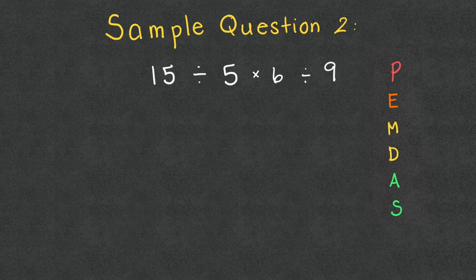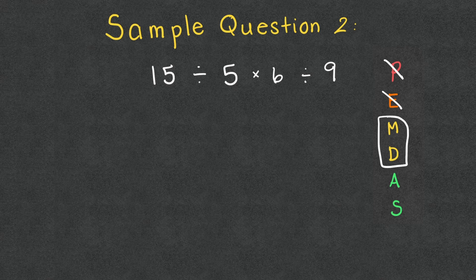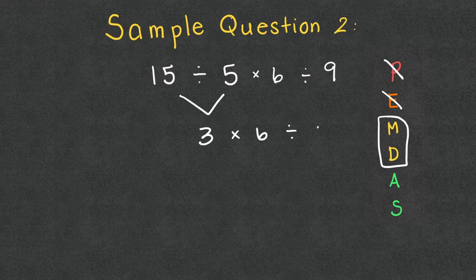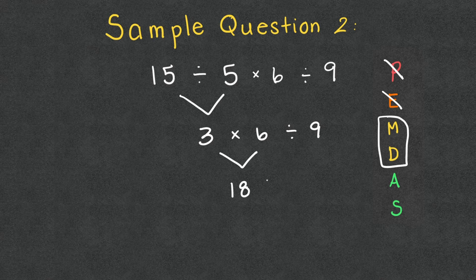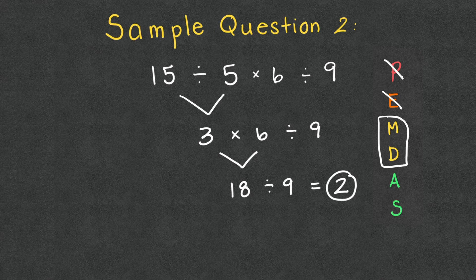Sample question two: 15 ÷ 5 × 6 ÷ 9. No parentheses, no exponents, but we do have multiplication and division — whichever comes first left to right. Starting left: 15 ÷ 5 = 3, then 3 × 6 = 18, then 18 ÷ 9 = 2. The answer is 2. We didn't even need addition or subtraction since they weren't involved.